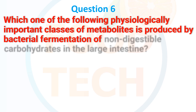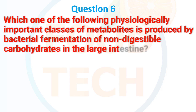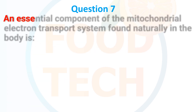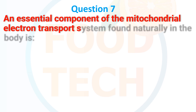Question 5: Which one of the following physiologically important class of metabolites is produced by bacteria through fermentation of non-digestible carbohydrates in the large intestine? a. Short chain fatty acid. b. Long chain fatty acid. c. Bile acid. d. Amino acid. The correct answer is short chain fatty acid.